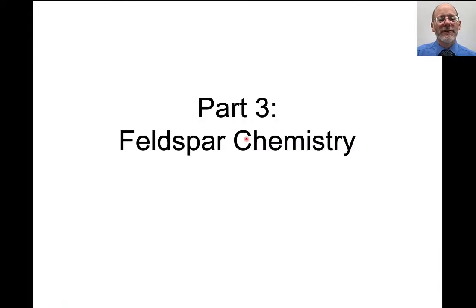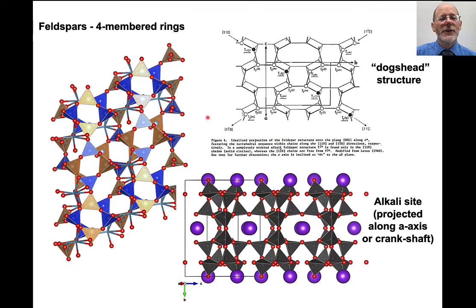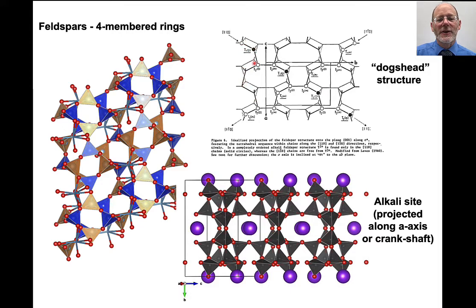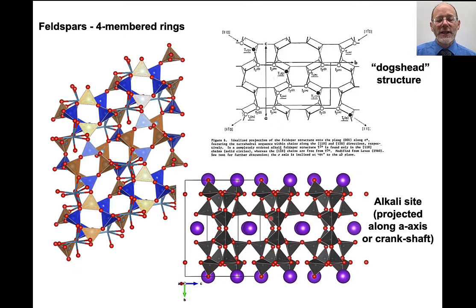Let's spend some time talking about feldspar chemistry. Feldspars consist of four-membered rings of silica and aluminum tetrahedra. These rings are arranged in a back-and-forth ribbon structure. There is a big open space where the strands separate from each other, and a narrower space where the strands approach each other. This means there's a big open space where an alkali ion — sodium, potassium, or calcium — can go. That's what you see if you look at this structure: big open areas where the alkali cations sit.